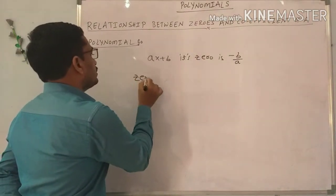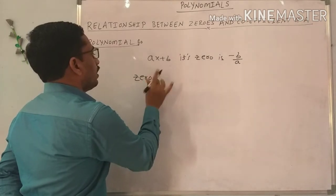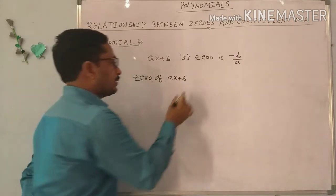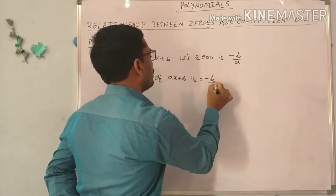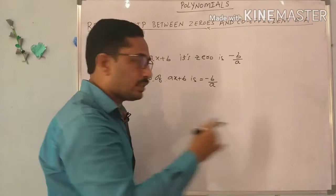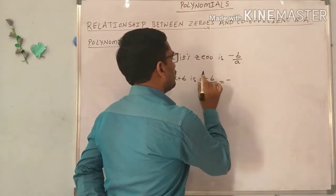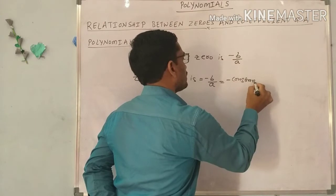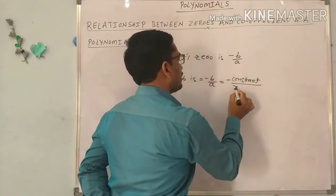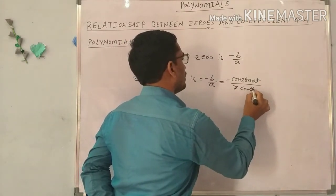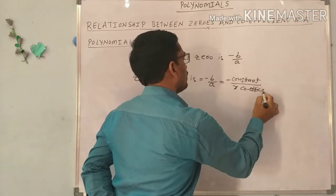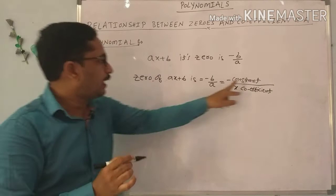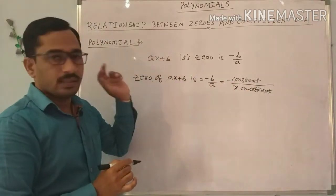So the zero of AX plus B, the linear polynomial, is equal to minus B by A. Here, minus B means constant term, and A means X coefficient. This is the relation between the zero and the coefficients of the linear polynomial.